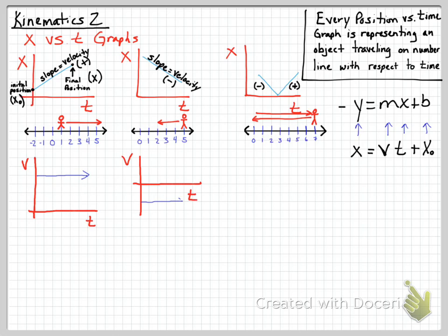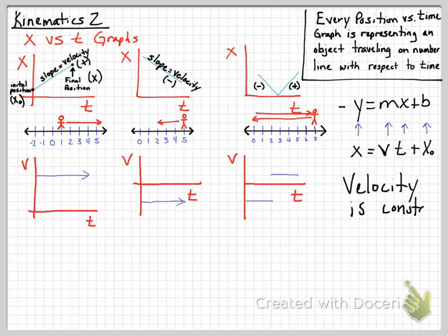Now I'm drawing the velocity versus time graphs that match these position versus time graphs. For every single one of these graphs, velocity is constant. For the first position versus time graph, the slope for velocity was positive, so the velocity versus time graph shows a constant positive line — velocity is constant and positive based on the graph above.